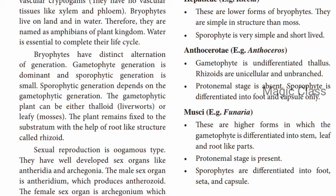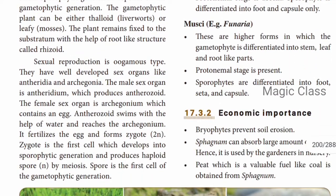Sexual reproduction in bryophytes is of the oogamous type. They have well-developed sex organs: anthridium and archegonium. Anthridium is the male sex organ, which produces antherozoids. Archegonium is the female sex organ, which contains the egg. With the help of water, the antherozoids reach the archegonium, fertilize the egg, and form the zygote. The zygote is 2N, meaning diploid.